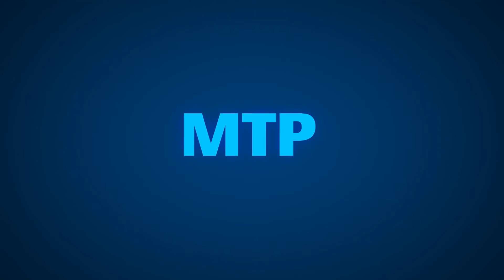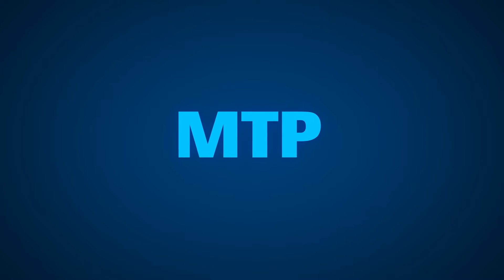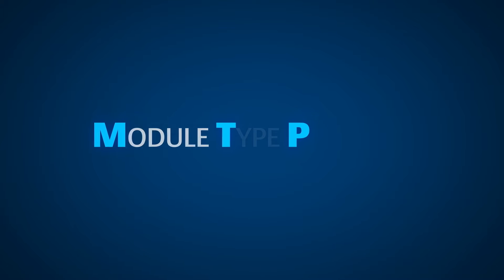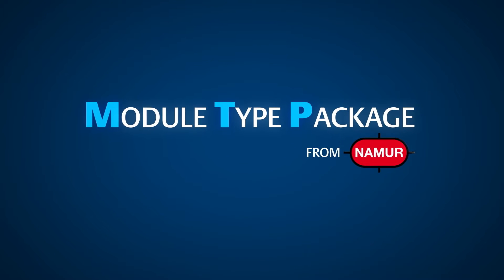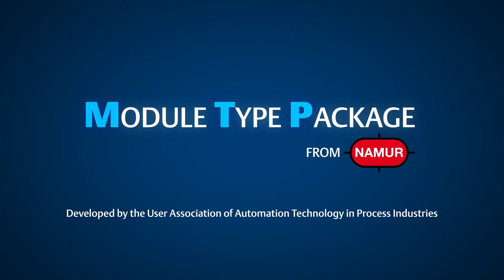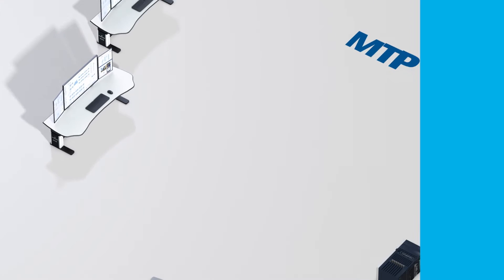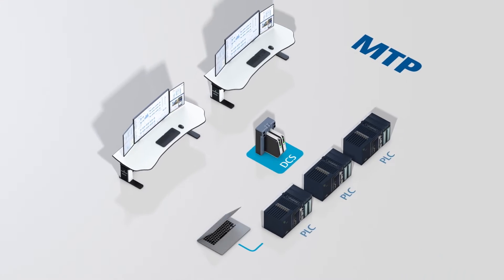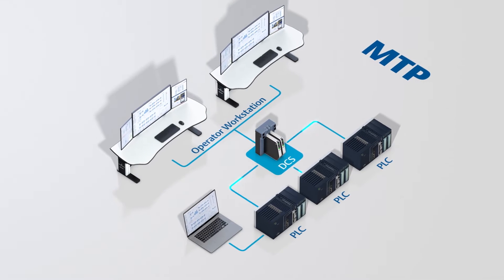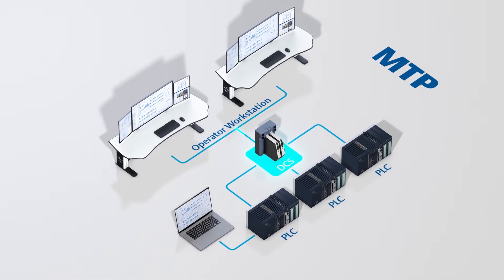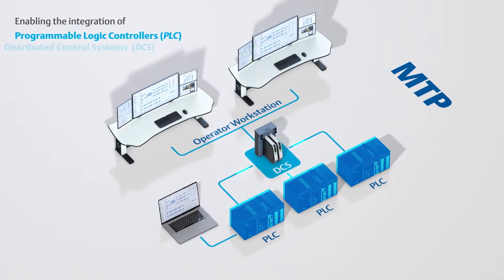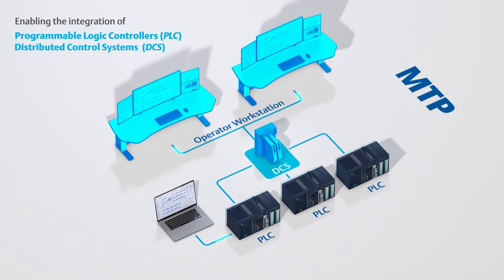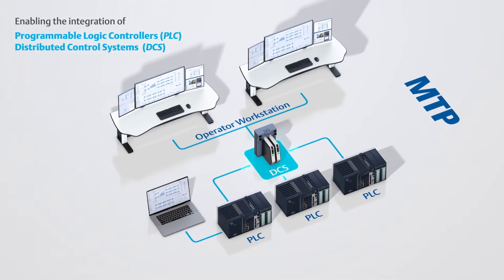Fortunately, a solution is being rapidly adopted to assist in resolving these issues: the Module Type Package implementation from NAMUR. MTP was developed by the User Association of Automation Technology in Process Industries to provide a framework for standardized connectivity between equipment to streamline interoperability, enabling the integration of programmable logic controllers and distributed control systems in an easier, more efficient manner.